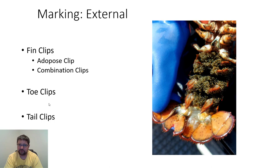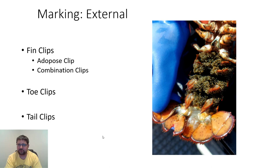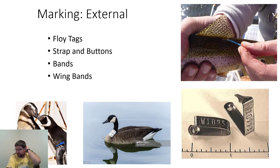Tail clips — you can clip the entire tail off an organism, or do a V-notch in the tail, or just clip the tip. Normally these are batch marks to indicate something specific about the organism.